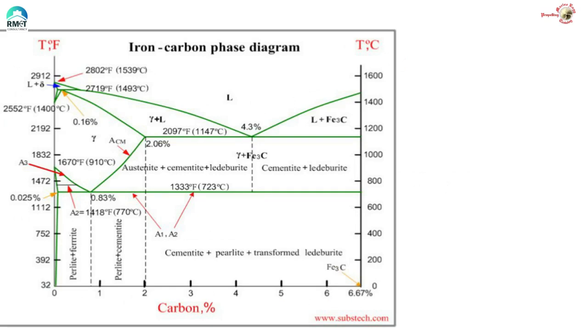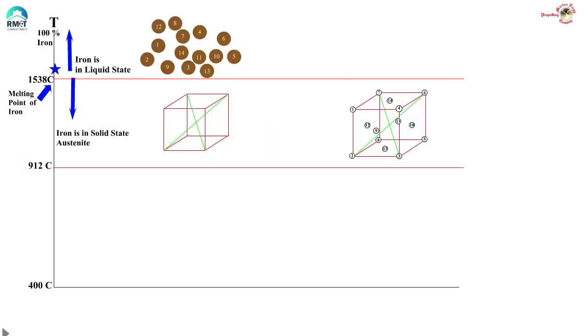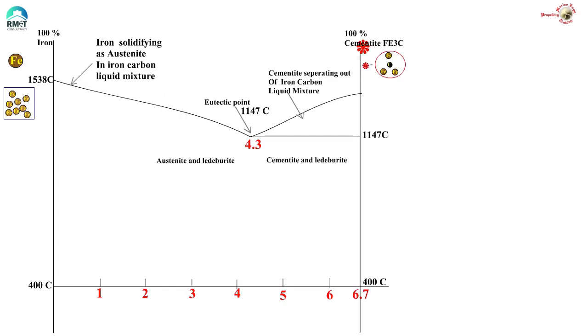In this video, we will complete the iron carbon diagram and understand what is eutectoid steel and types of eutectoid steels. We will just stop short of heat treatment which we need to push into the next video. In the previous video, we cooled pure iron till approximately 1000 degrees C and stopped. We saw that liquid mixture of iron and carbon transform into solid phase based on the percentage of carbon, and we also saw what is the eutectic point and what is ledeburite.